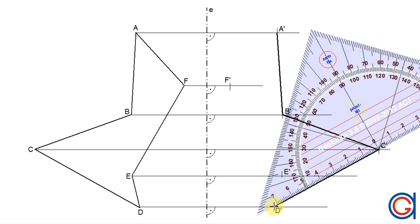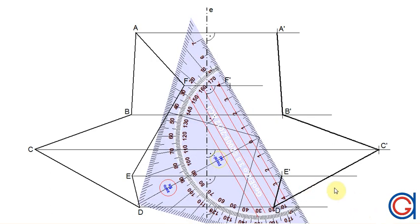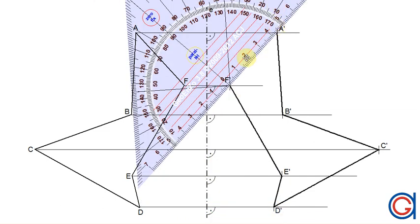From C prime to D prime, from D prime to E prime, from E prime to F prime. And finally we will close our irregular hexagon joining the last vertex F prime back to A prime.